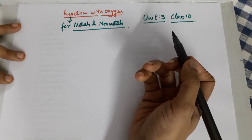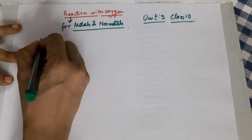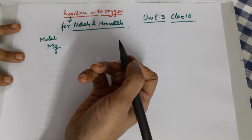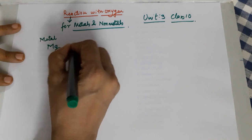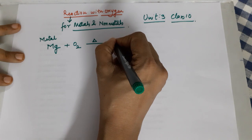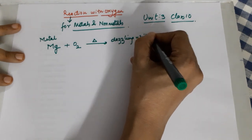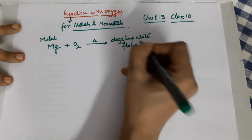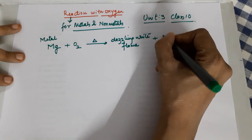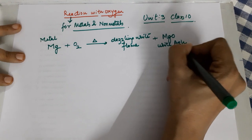The first example: I am taking a metal — magnesium. I'm taking a fresh piece of magnesium without any coating over it. This fresh piece of magnesium I heat in the presence of oxygen. It catches fire and there is a dazzling white flame that you observe.